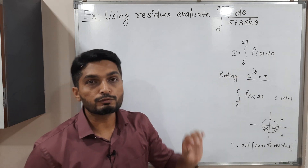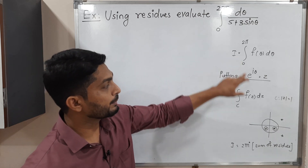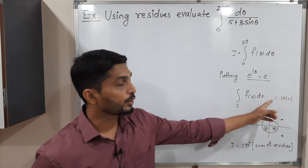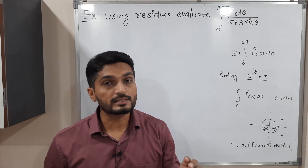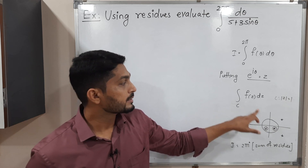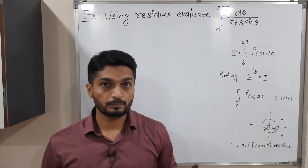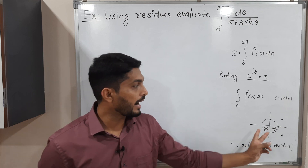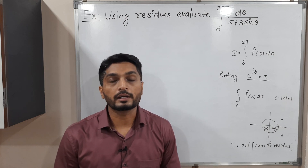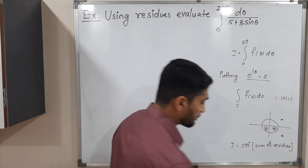To recap the method: for this type of integration, always put e^(iθ) = z. This converts the integral into ∮_C f(z) dz over C where |z| = 1. Find the singular points, focus only on those inside the circle, find their residues, and the value of integration is 2πi times the sum of those residues.